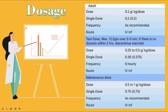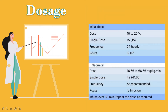Dosages: The adult dose is 0.2 grams per kilogram, administered by IV. Test dose: maximum 12.5 grams over 3–5 minutes; if there is no diuresis within 2 hours, discontinue mannitol. The neonatal dose is 16.66 to 66.66 milligrams per kilogram, administered by IV infusion over 30 minutes; repeat the dose as required.